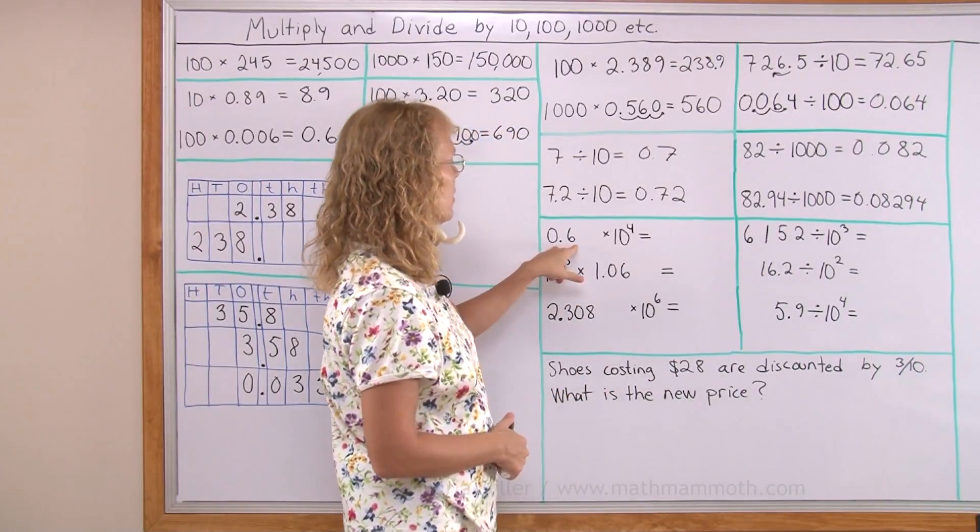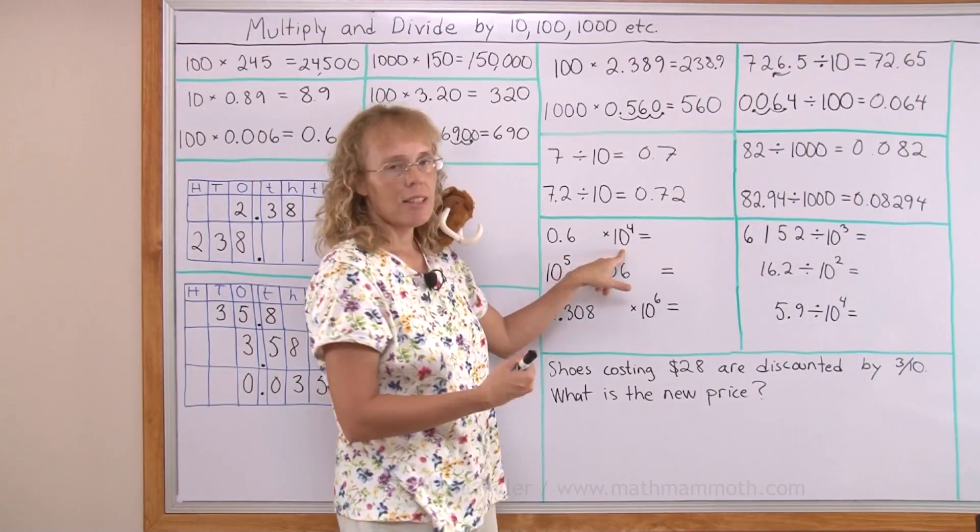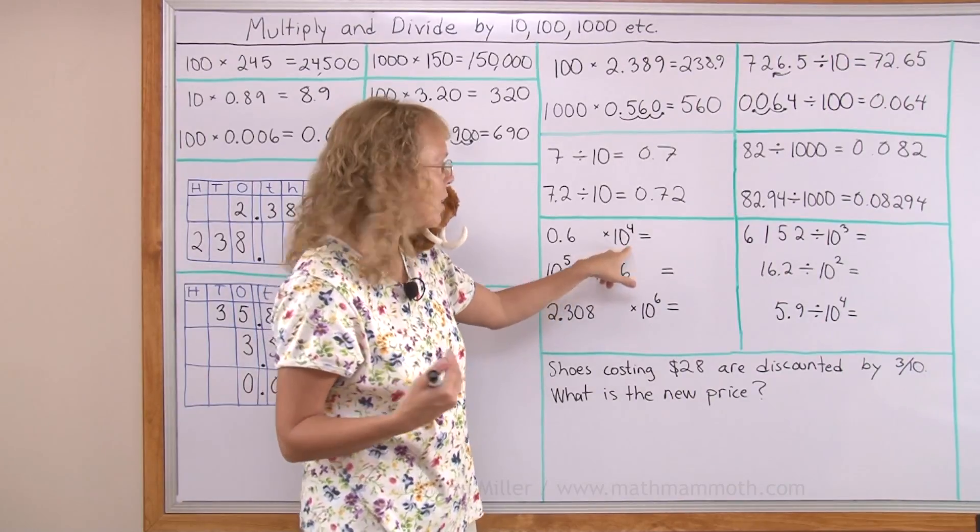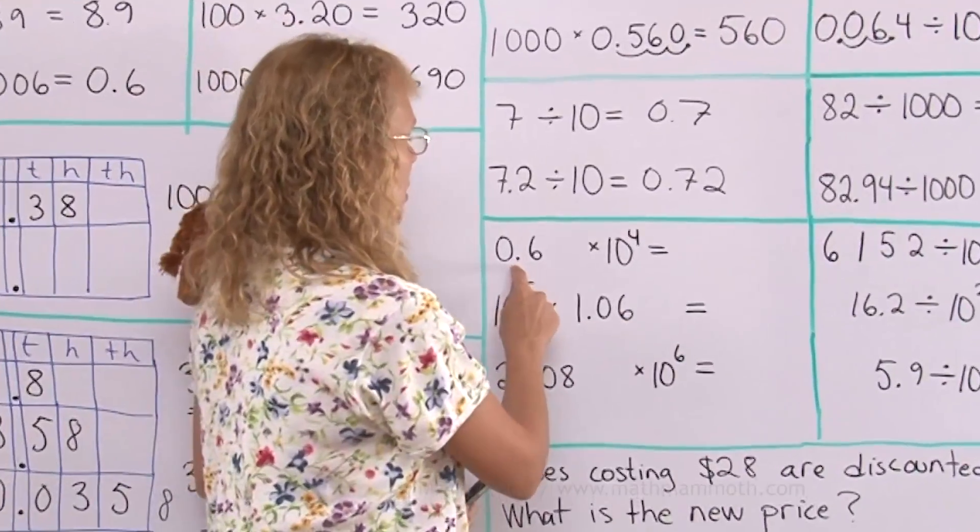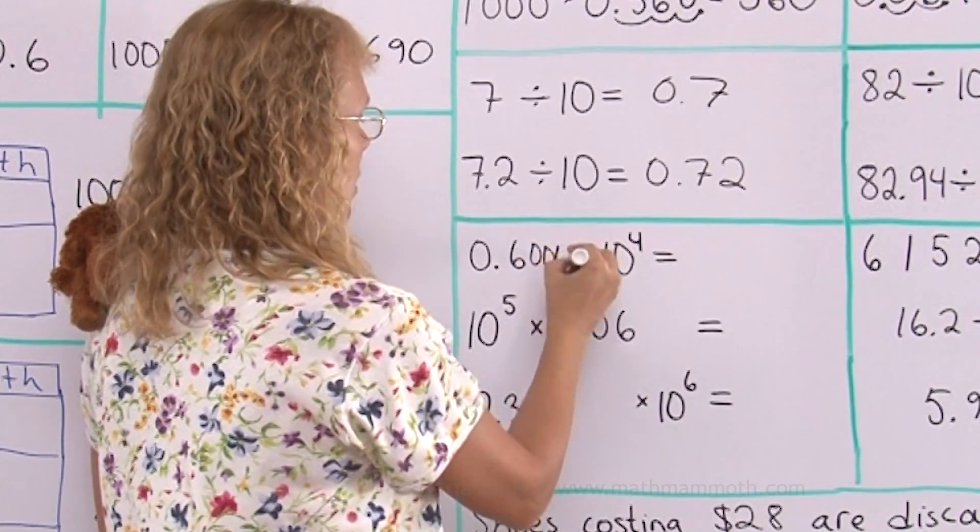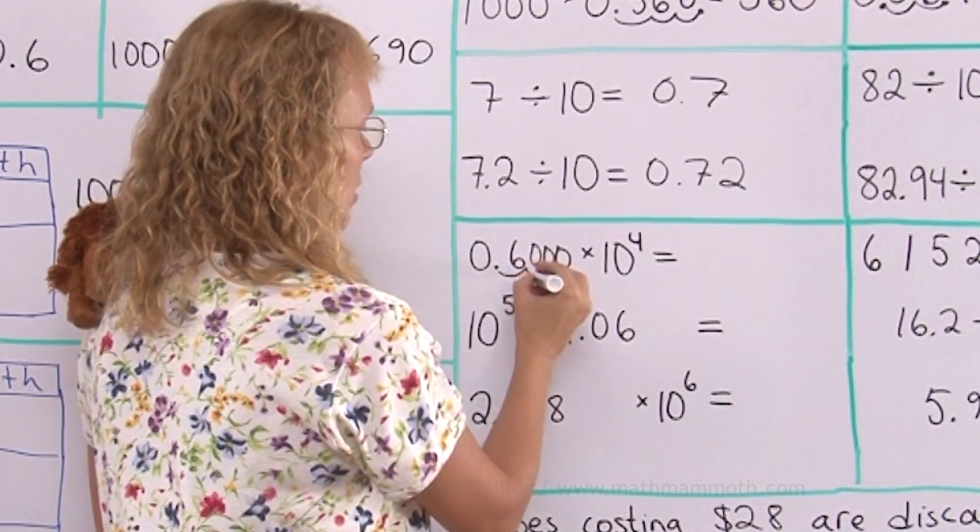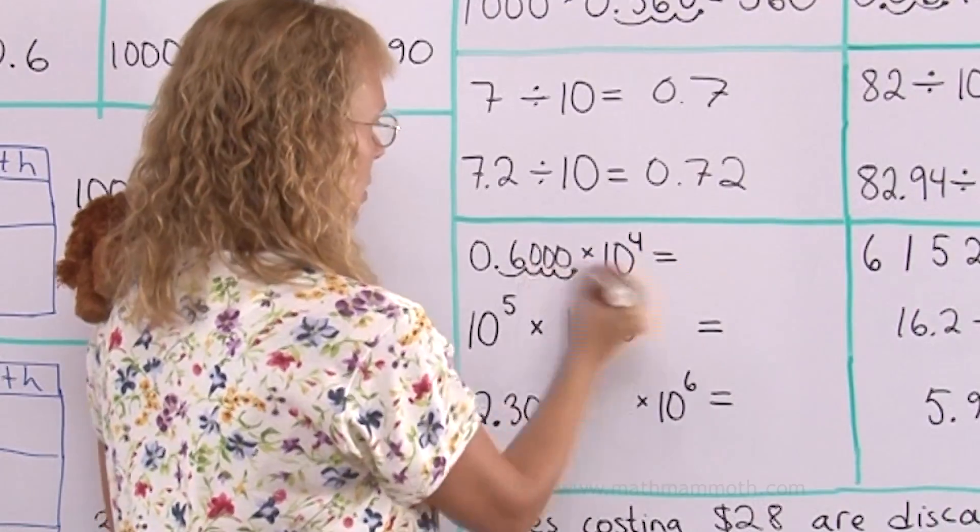Here this means that we are multiplying by 10,000. We move the decimal point four steps. There's four there. Move the decimal point four steps here. I need to put zeros here to see how it moves. One, two, three, four. Right there. 6,000.